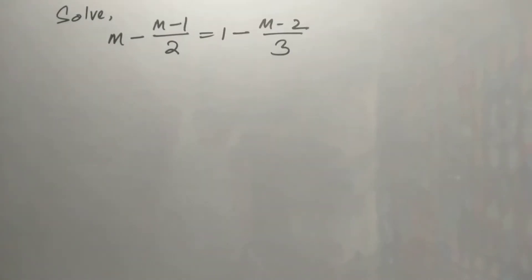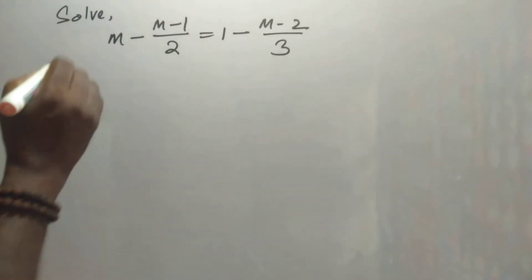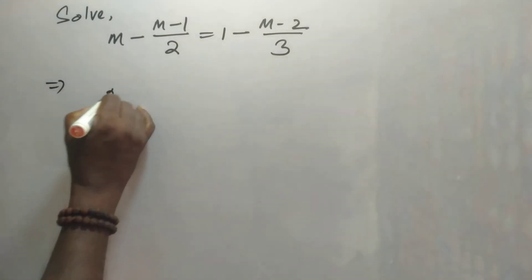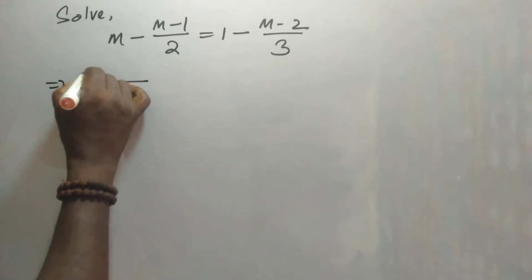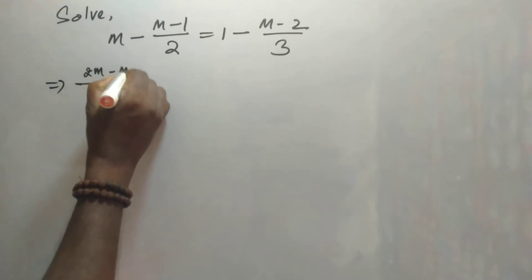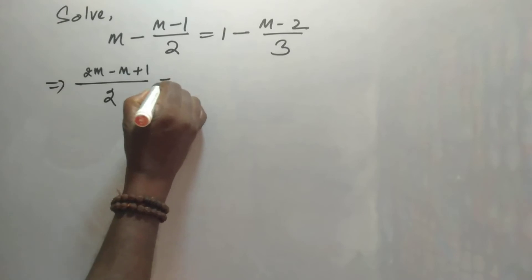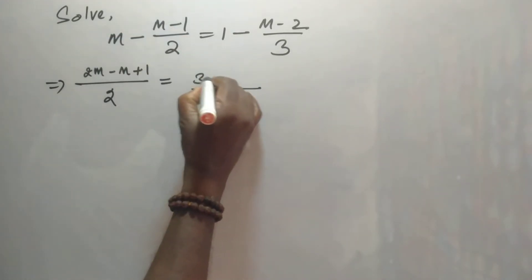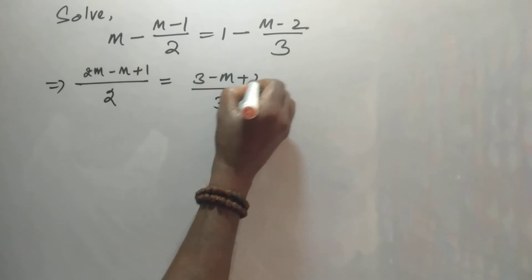Solve m minus (m minus 1) by 2 is equal to 1 minus (m minus 2) by 3. Now, 2 is the LCM; this gives 2m minus m plus 1 is equal to, with 3 as the LCM, this is 3 minus m plus 2.